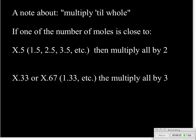Now, a note about that multiply till whole. Really, most of the problems we're going to encounter, we may have to multiply by two, we may have to multiply by three. Rarely will you get problems that have more than this. If your number of moles of one of your compounds ends in a 0.5, whether it's 1.5, 2.5, 3.5, et cetera, then you're going to multiply all your number of moles by two to kind of clear out that 0.5. If the decimal is somewhere near one-third or two-thirds, which would be 0.33 or 0.67, something close to that, it might be 0.34 or 0.31 or 0.65, something close to one of those numbers, then what you're going to do is multiply all of your number of moles by three.